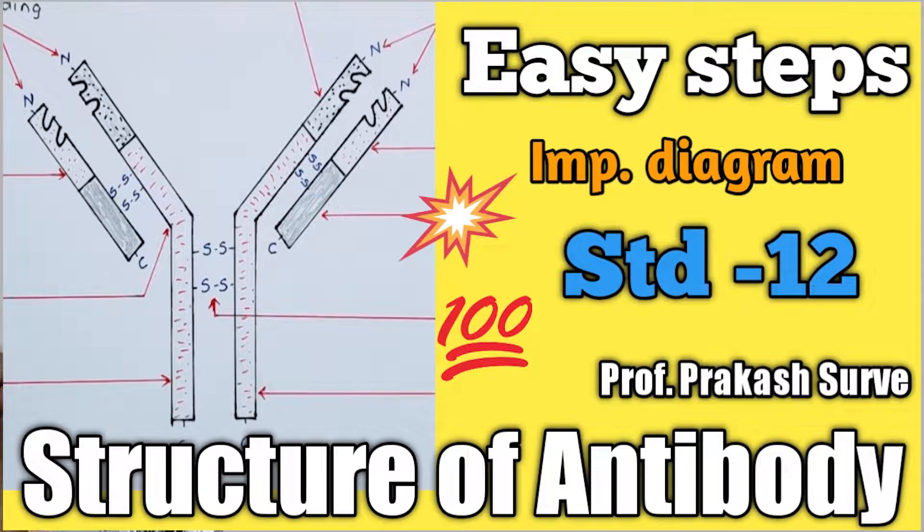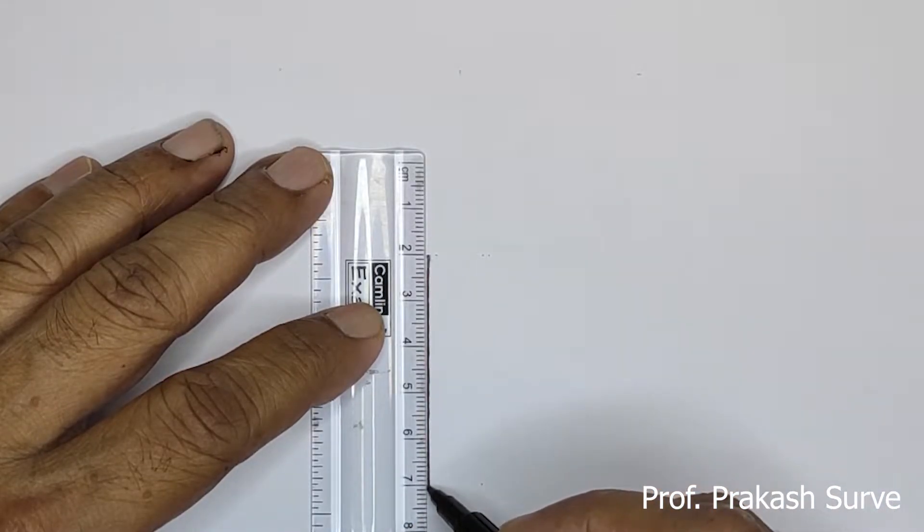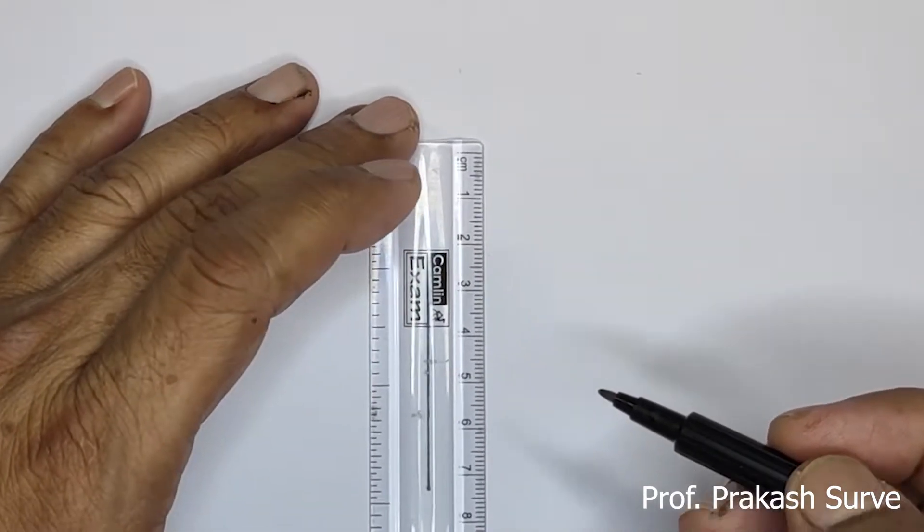Welcome dear students to my channel. Today we will see the structure of antibody. Antibody is a Y-shaped molecule, so first we'll draw two lines which are corresponding to each other, two parallel lines.